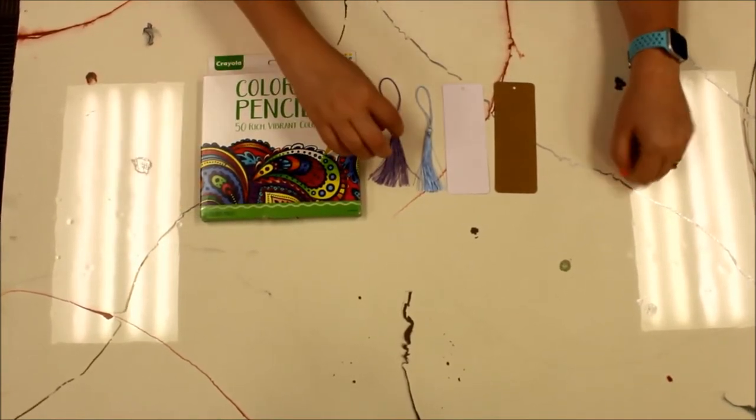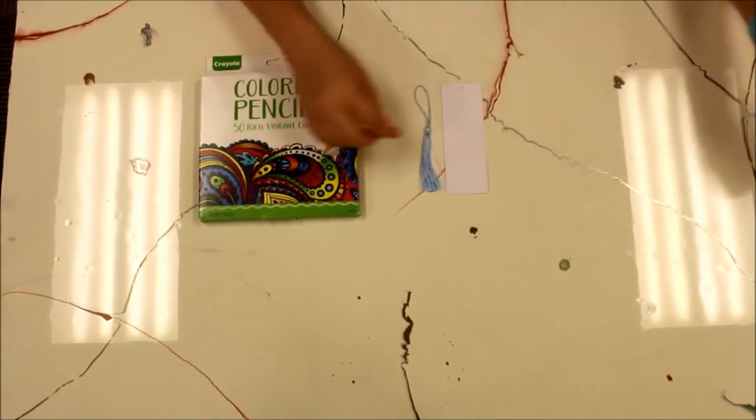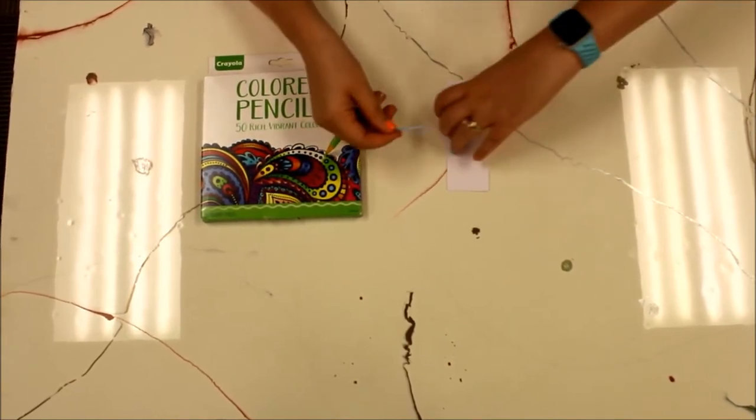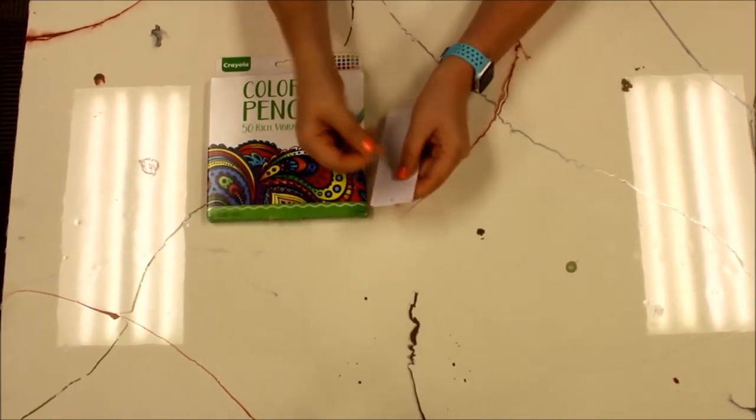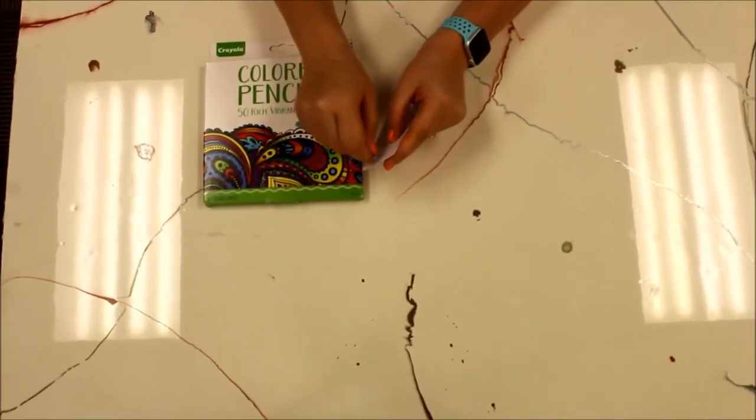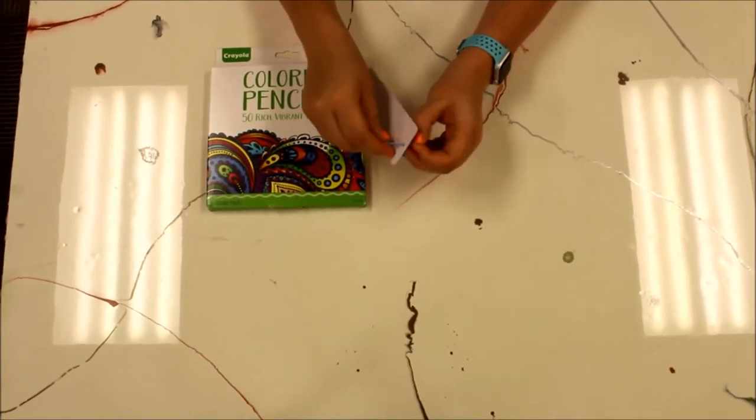So first we're going to start by putting our tassel in our bookmark. So you take your bookmark, you're going to loop your tassel through it, pull it through,